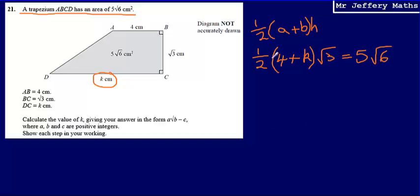So what I've now got is I've now got an equation which I'm going to solve. So first of all, I'm just going to tidy this up a little bit. So this half 4 plus K, let's deal with that. Half of 4 plus K, I can just call that 2 plus half K. And what I'm doing is 2 plus half K, and that's being multiplied by root 3. And that is equal to 5 root 6.